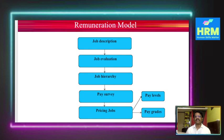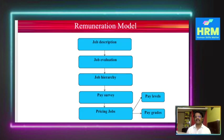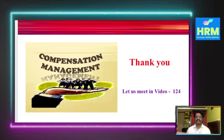Remuneration models follow a sequence: job description, job evaluation, job hierarchy, pay survey, pricing jobs, pay level, and pay grade. Remuneration determination starts with job description, then job evaluation to assess the worth of the job, followed by job hierarchy. We conduct pay surveys among other organizations and within our own, then go for pricing jobs through pay levels and pay grades. With this, we'll meet in video module 124. Thank you.